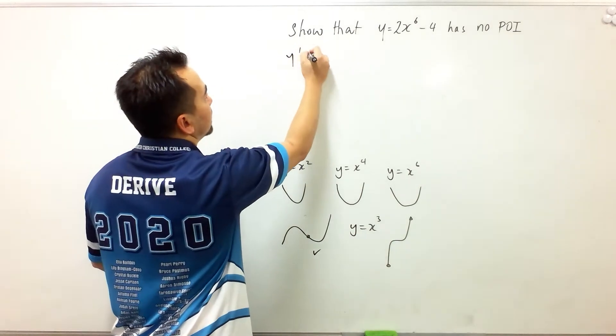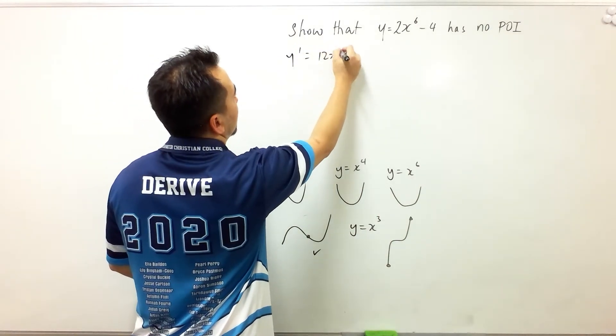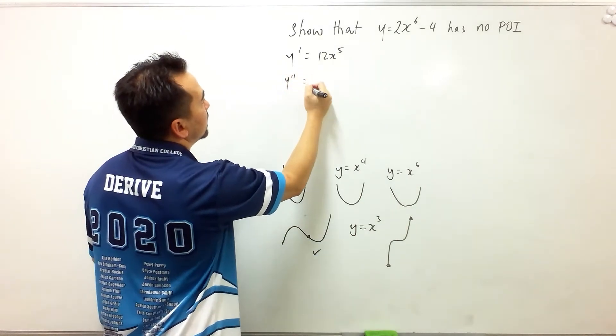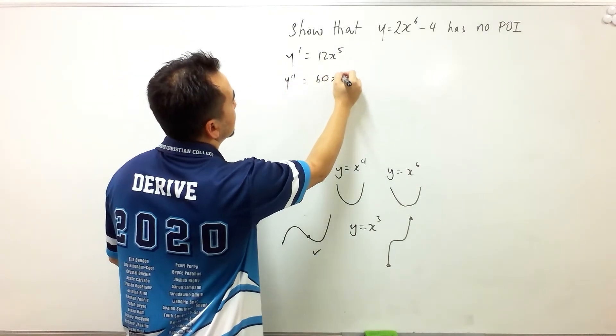The first derivative is 12x to the power 5 with no constant, and then the second derivative is 60x to the power 4.